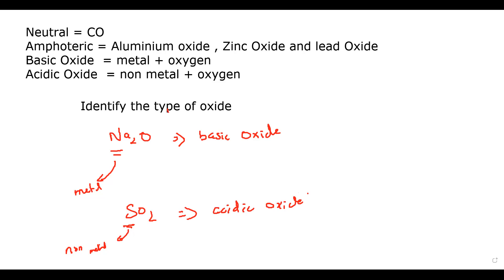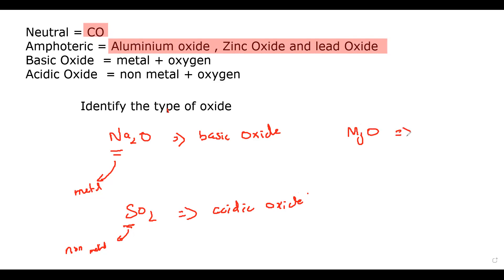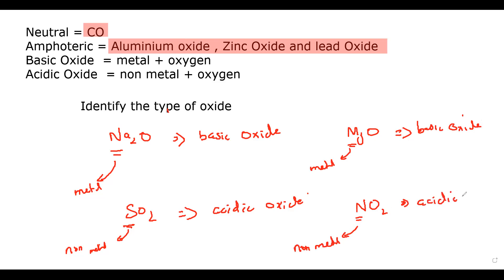Remember: memorize the four exceptions — three amphoteric (aluminium, zinc, lead oxide) and one neutral (carbon monoxide). If a compound does not belong to these exceptions, check the element: if it is a metal, the oxide is basic; if it is a non-metal, the oxide is acidic. For example, magnesium oxide — magnesium is a metal and not in the exceptions, so it is a basic oxide. Nitrogen dioxide — nitrogen is a non-metal, so it is an acidic oxide.